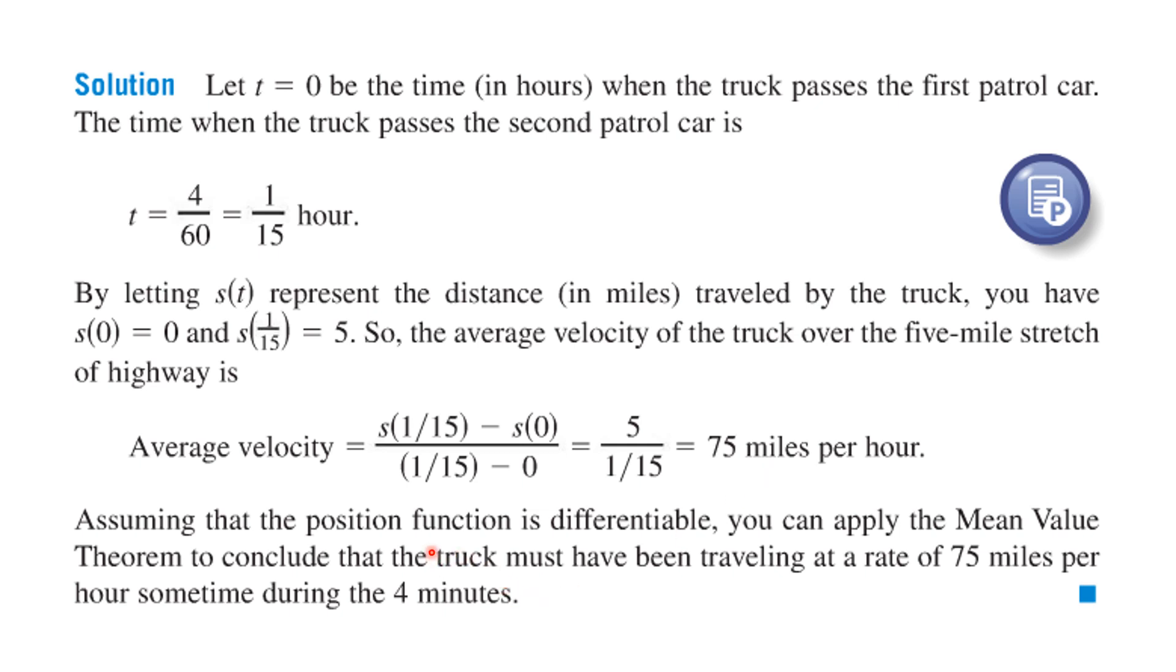Now you can assume that the position function is differentiable. Mother Nature often is kind and makes things pretty smooth. That means the mean value theorem can be applied. That means that the slope or the speed, the instantaneous velocity if you want to, had to be 75 miles per hour sometime during the four minutes and they would be justified in giving this person a ticket.